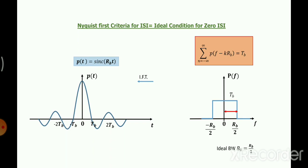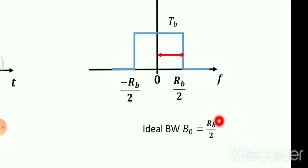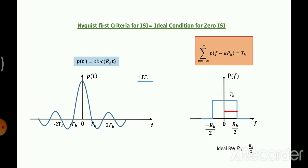The ideal bandwidth for zero ISI is B_0 = R_b/2, which is the minimum (Nyquist) bandwidth. However, the abrupt transition in the rectangular frequency-domain spectrum is a practical problem — it is not feasible to realize such an abrupt transition. A practical solution for zero ISI will be discussed in the next video.